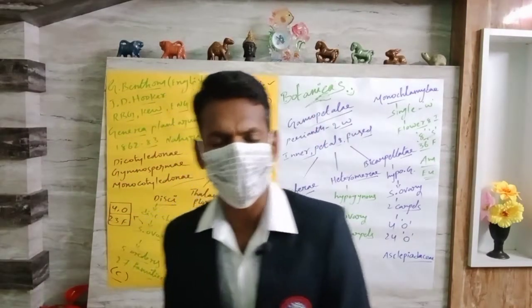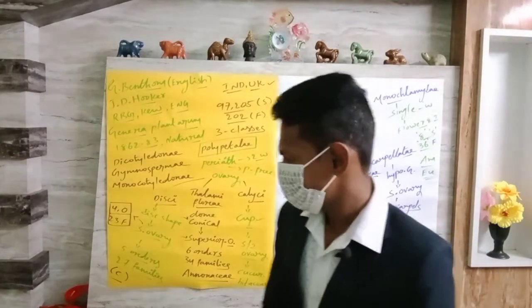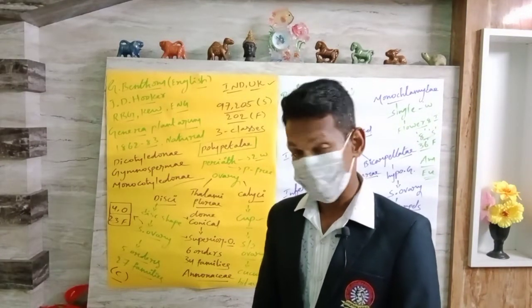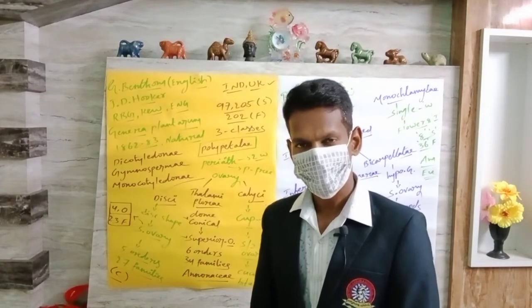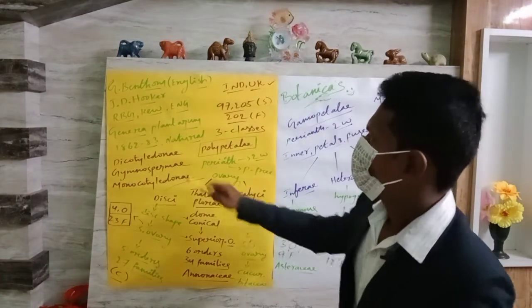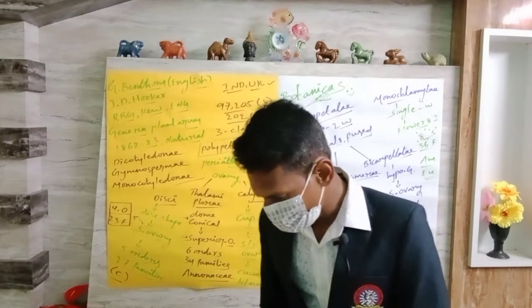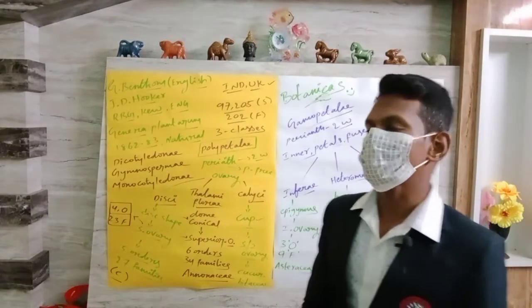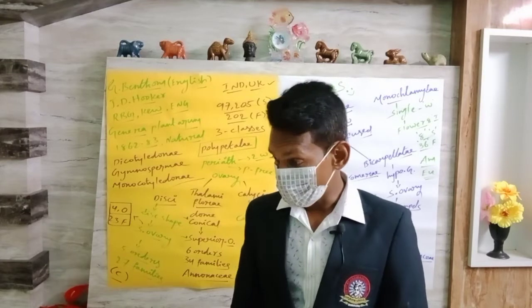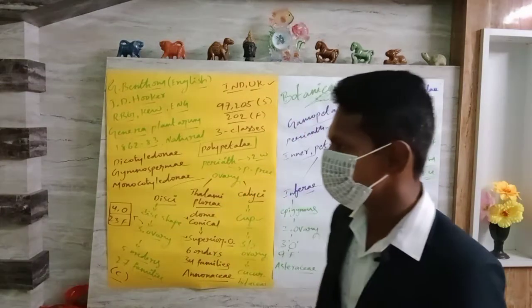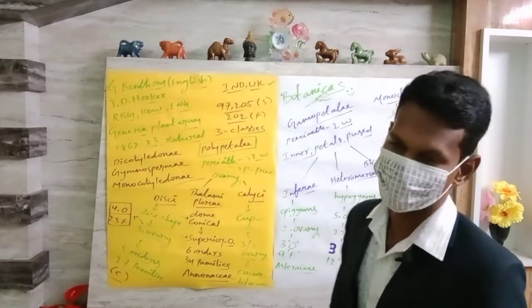Hello dear Botanicas learners, welcome to our botany class. In this video module we are going to discuss an important topic: Bentham and Hooker classification. Generally we know R.H. Whittaker classification covers Monera, Plantae, Animalia, Algae, Fungi — these are all kingdoms classified under R.H. Whittaker's classification.